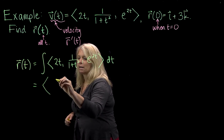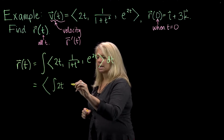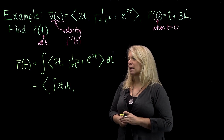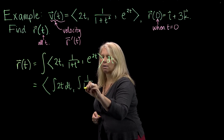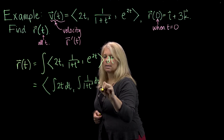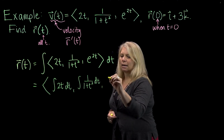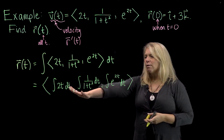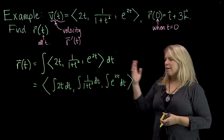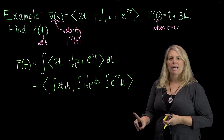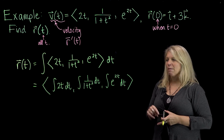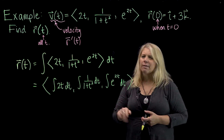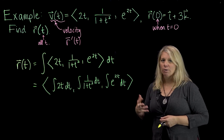I'm going to find the antiderivative by finding antiderivatives of each component function. I'll get a vector function by integrating 2t with respect to t for the i component, the integral of 1 over (1 plus t squared) dt for the j component, and the integral of e to the 2t for the k component. I want to emphasize something about what happens with indefinite integrals and how it's slightly different when dealing with a vector function.